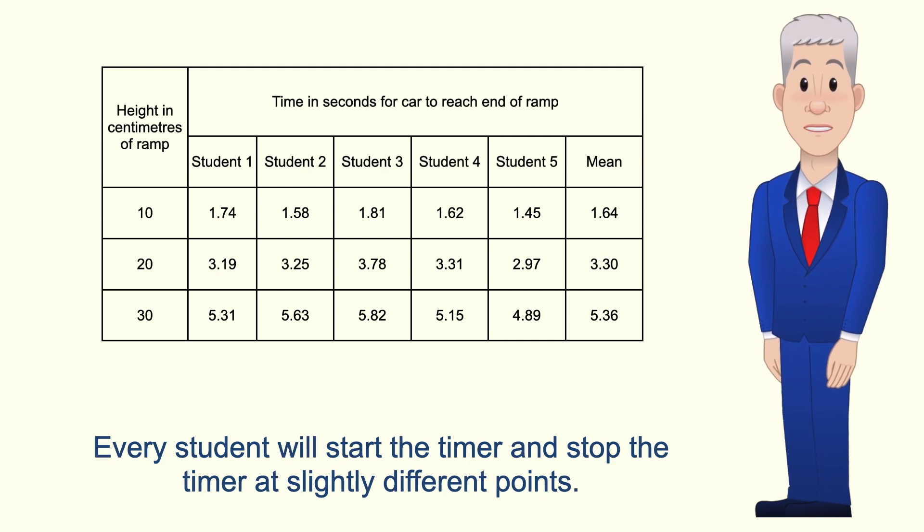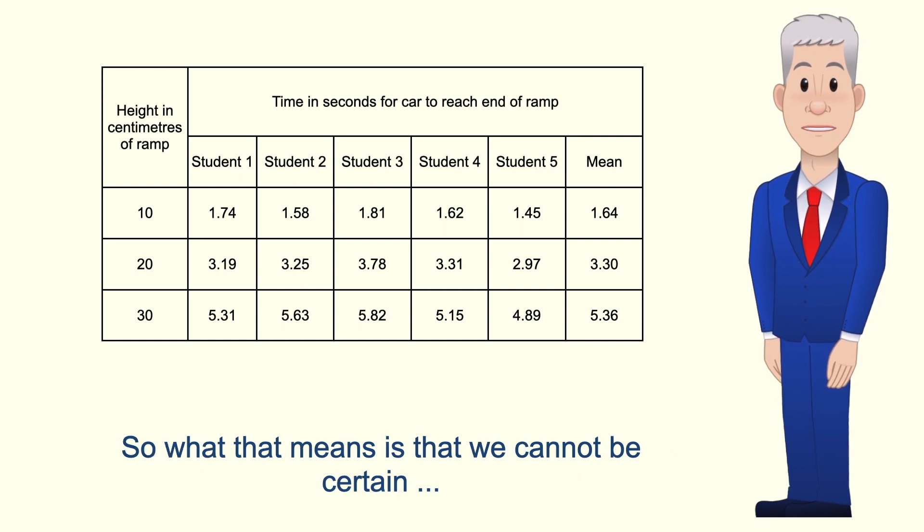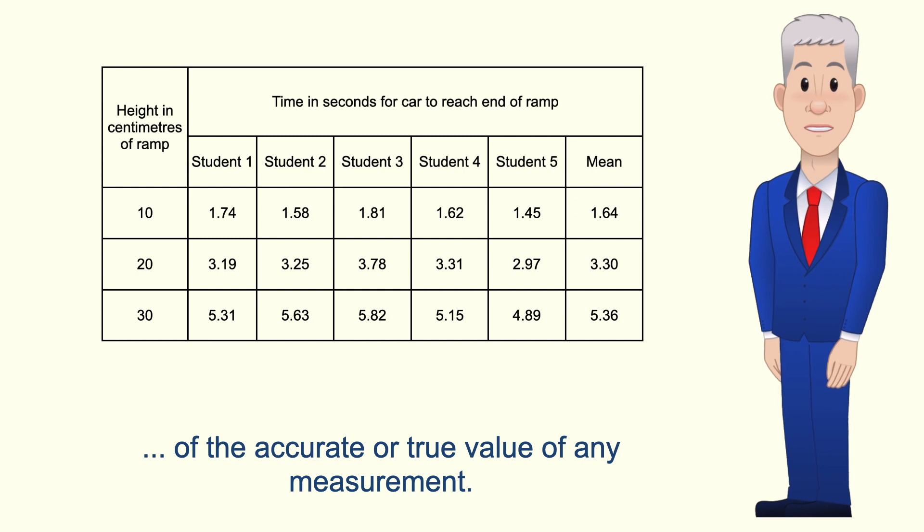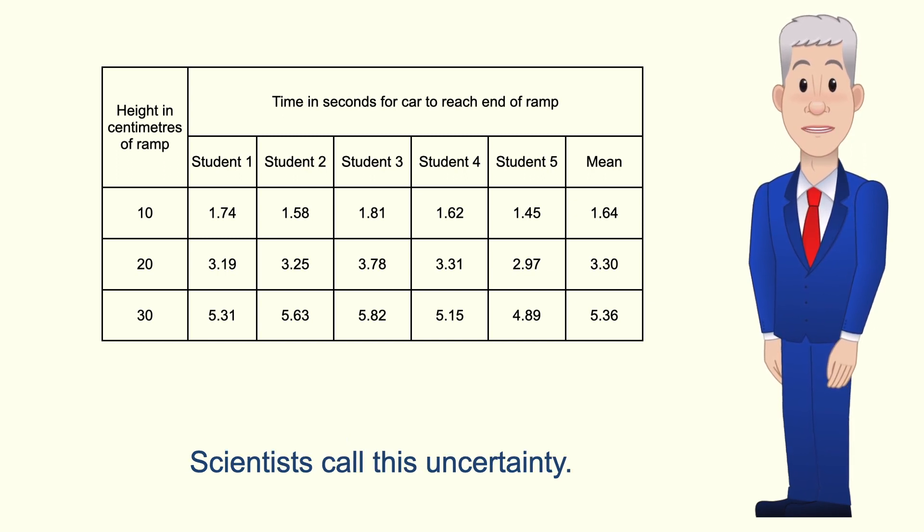Every student will start the timer and stop the timer at slightly different points. So what that means is that we cannot be certain of the accurate or true value of any measurement. Scientists call this uncertainty.